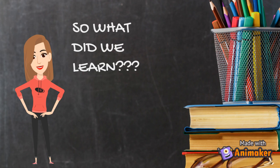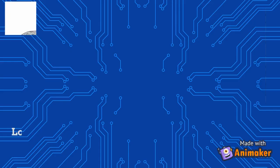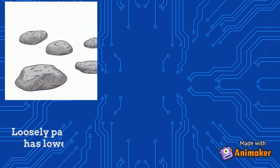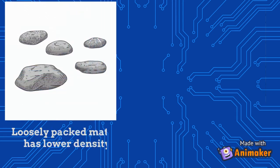So, what did we learn? As you saw in the experiment, some objects floated while others stayed in the water. All objects are made of matter. In some objects, this matter is loosely packed. That makes the object low in density. Now, if the density of an object is lower than the density of water, it floats.